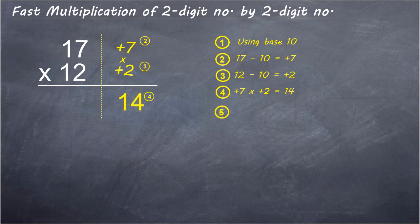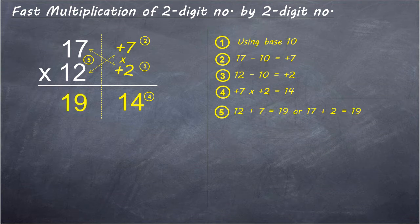Step 5: 12 plus 7 equals 19, or 17 plus 2 equals 19.